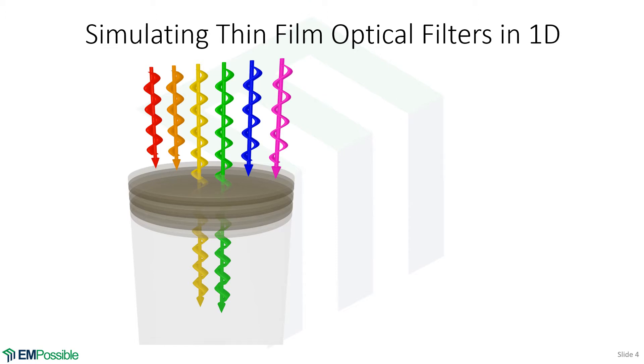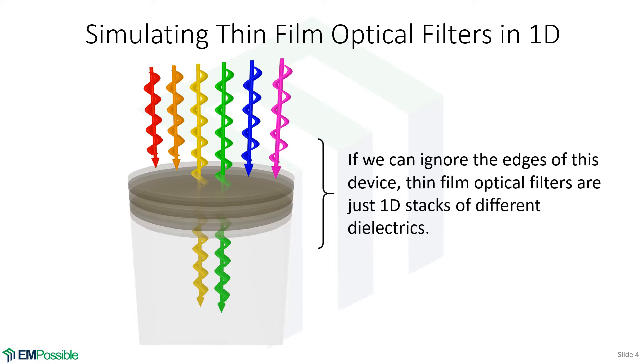Well, as long as we're willing to ignore what's happening at the edges, where of course there would be scattering and diffraction and things that can't be handled in one dimension, very often we only use this in the middle. So if we can ignore the edges and we only care about what happens in the middle, this becomes a one-dimensional simulation.